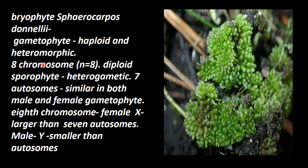In the haploid gametophytic stage, it has got eight chromosomes, so single n is equal to eight. It is not diploid in nature; two n equals sixteen. The diploid stage is called sporophyte. It is heterogametic in nature — it produces two types of gametes: egg and sperm.